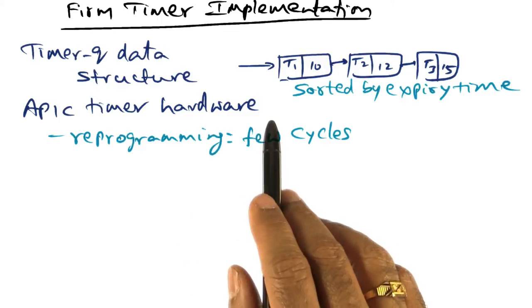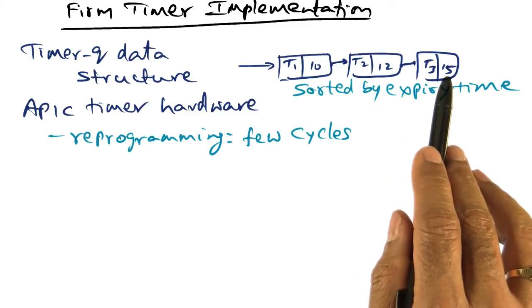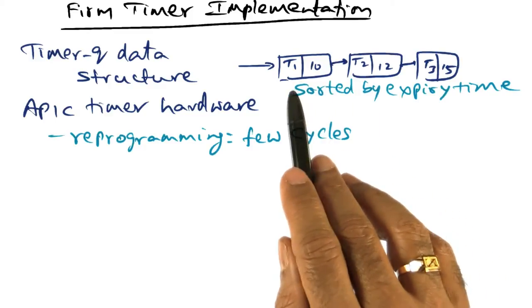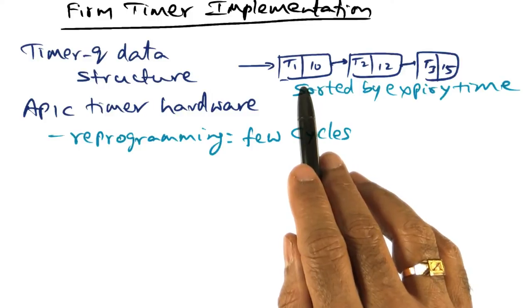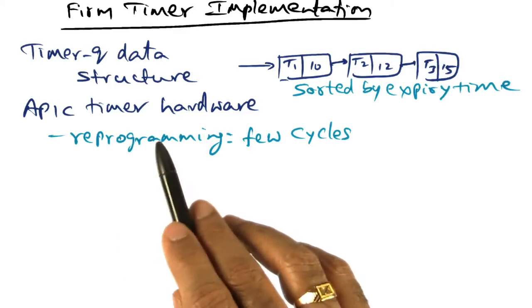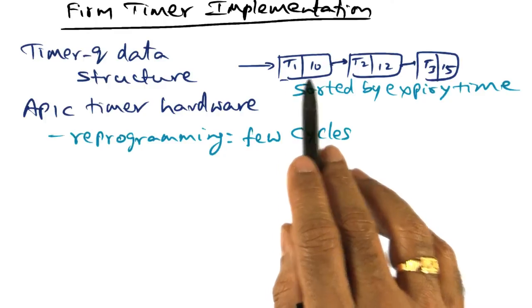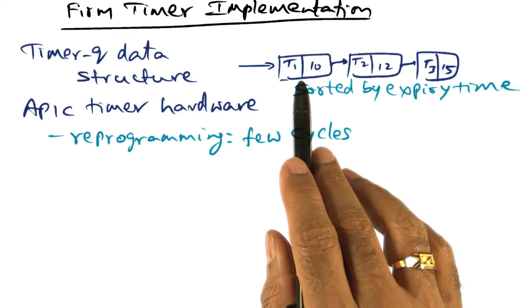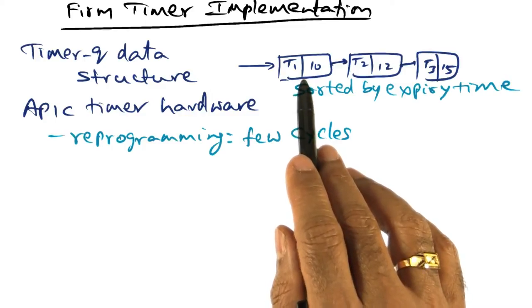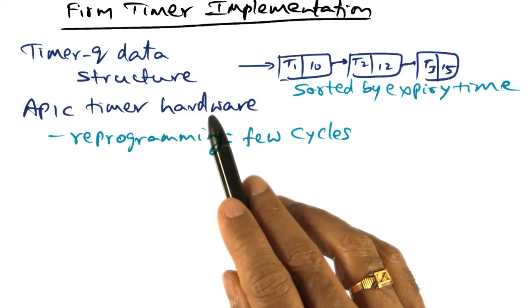When the APIC timer expires, the interrupt handler will go through this timer queue data structure and look for tasks whose timers have expired. Some of these tasks may be periodic tasks, some may have been programmed to deal with the APIC timer event. Associated with each entry is the callback handler for dealing with that particular event, and those callback handlers are called by the interrupt handler upon the expiry of the APIC timer.